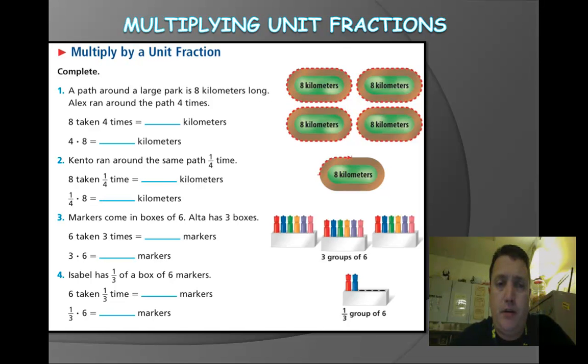Now, we're going to take a look at this. This is a page I took out of the math journal, but we're going to take a look at this together. I'm just going to kind of walk you through some examples of how to multiply by a unit fraction. So let's take a look at right here. It says a path around a large park is 8 kilometers long. Alex ran around the path 4 times, which is given in this image over here. So we know that 4 times 8 is what's going to give us our answer here, and that would be 32 kilometers. So he went 8 kilometers and he did that 4 times, 32 kilometers.